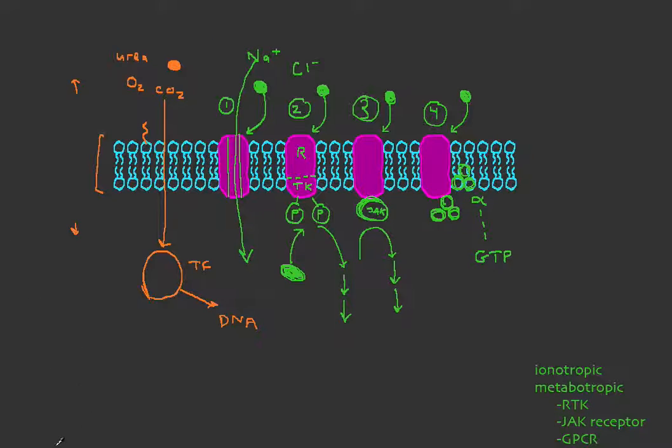And when it does so, the alpha subunit doesn't want to associate with the rest of the G-protein. It would rather chill out with this adenylyl cyclase.